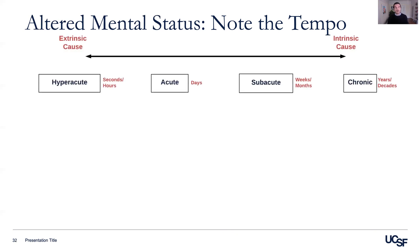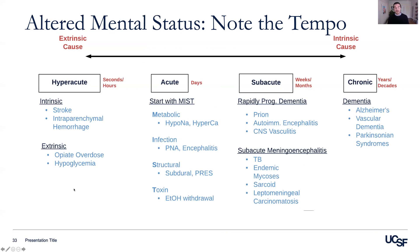If you remember only one thing: the longer altered mental status has been around, the more likely it is to be due to a problem with the brain itself. Hyper-acute causes include hypoglycemia and opiate overdose, but also life-threatening intrinsic causes like stroke or an intracranial hemorrhage. Altered mental status over days is where the MIST mnemonic really comes into play. Over weeks and months, consider the rapidly progressive dementias and sub-acute meningoencephalitis — including infections like tuberculosis or fungal infections, as well as non-infectious diseases like sarcoid or leptomeningeal carcinomatosis. Over years and decades, this is where primary dementia syndromes such as Alzheimer's, vascular dementia, and Parkinsonian disease apply.